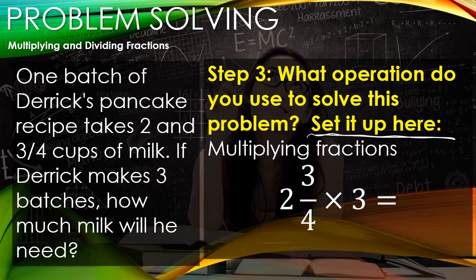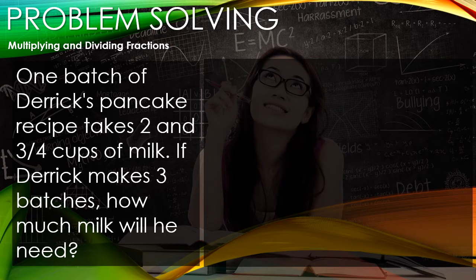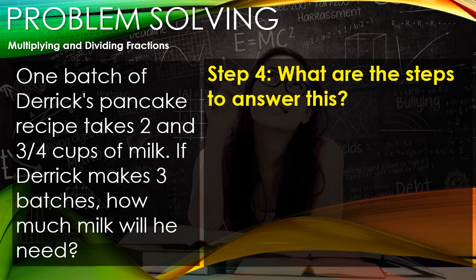We are slowing you down so you can read the problem, figure out what operation it is, and set it up correctly before you start solving it. Now we're at step 4: what are the steps to answer this? When multiplying fractions, first we make the mixed numbers into improper fractions.